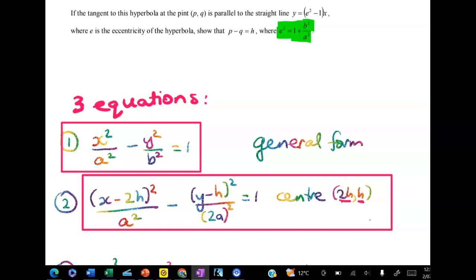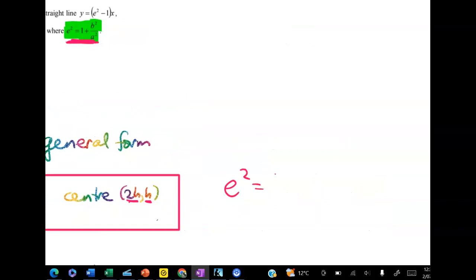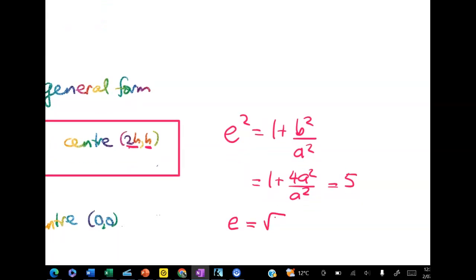Also notice that we had a squared and for b squared we had 2a all squared. That's quite helpful for the last part because it gave me e squared is equal to 1 plus b squared over a squared. So e squared was equal to 1 plus 4a squared over a squared which is 5. And that gives me e is equal to the positive root of that which is root 5. E by definition is above 0.